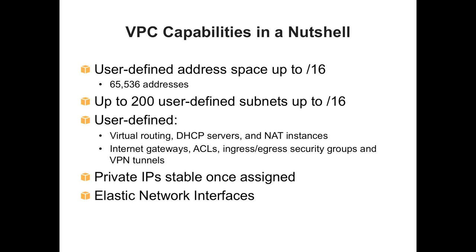If you're providing routing out to the Internet, you'll get a NAT — network address translation — instance set up for you, which you can scale up and down as needed. We will create Internet gateways for you. You can set up ACLs to control security, create ingress and egress security groups, create tunnels out to your environment. And these private IPs are stable once assigned — they stick around upon a reboot.